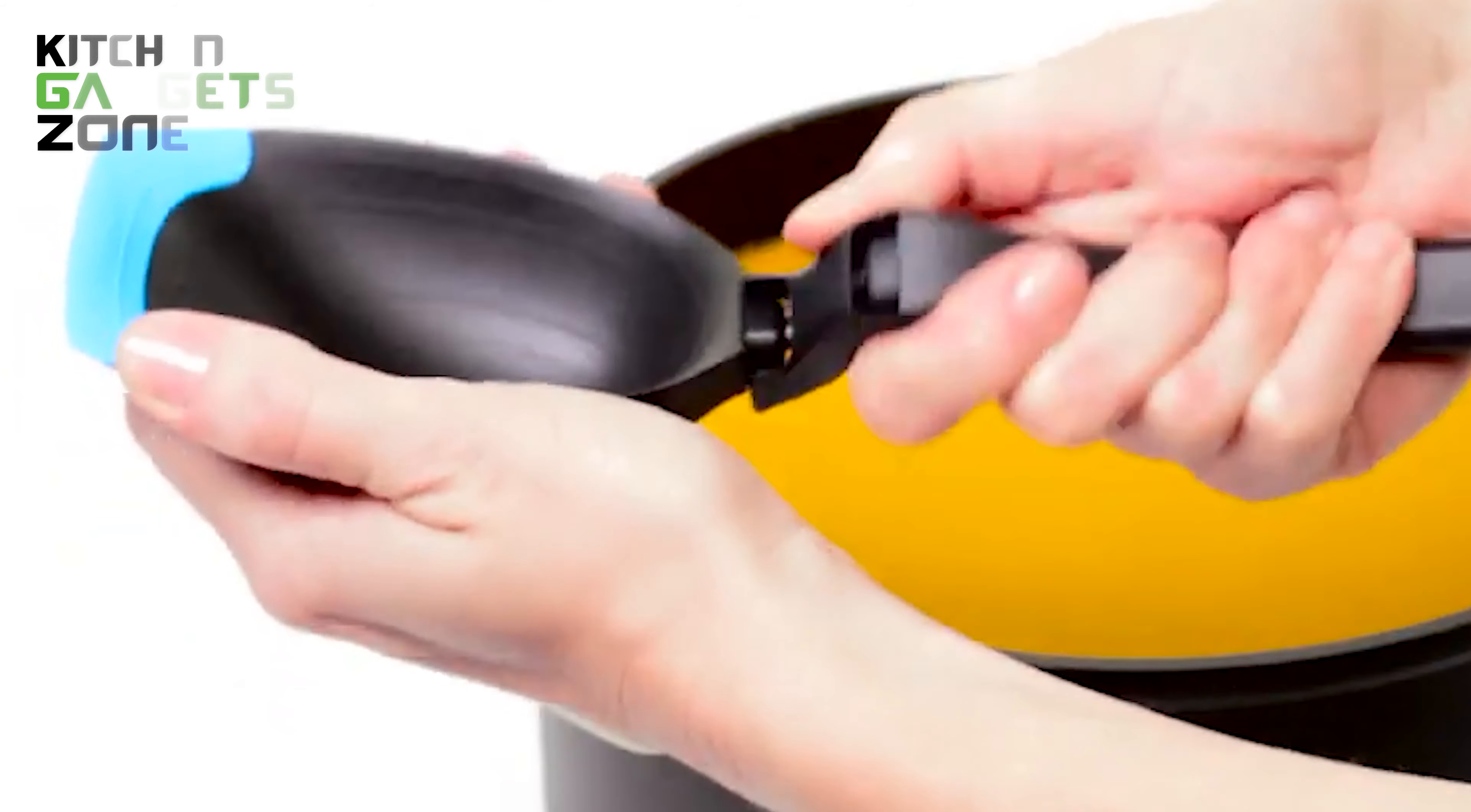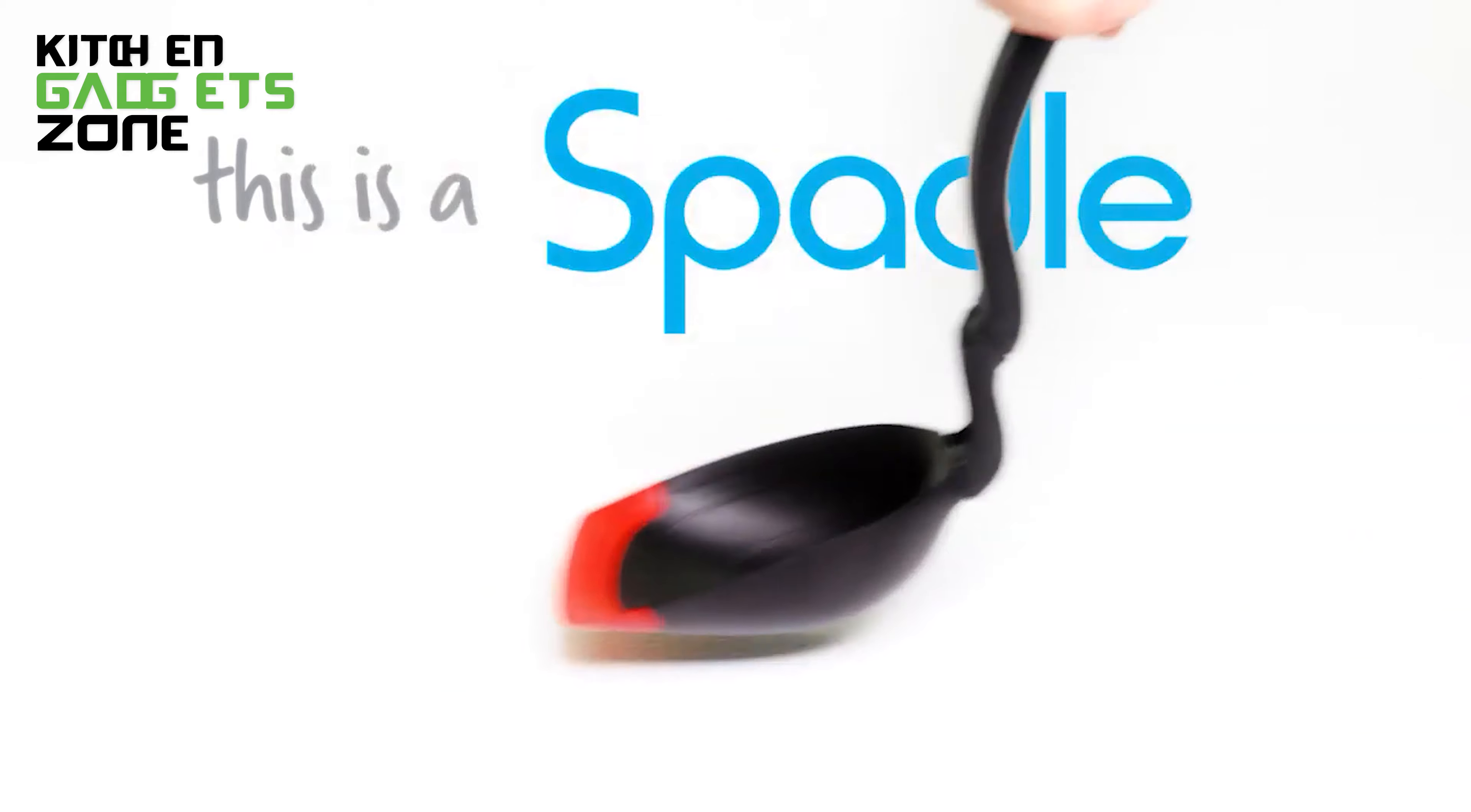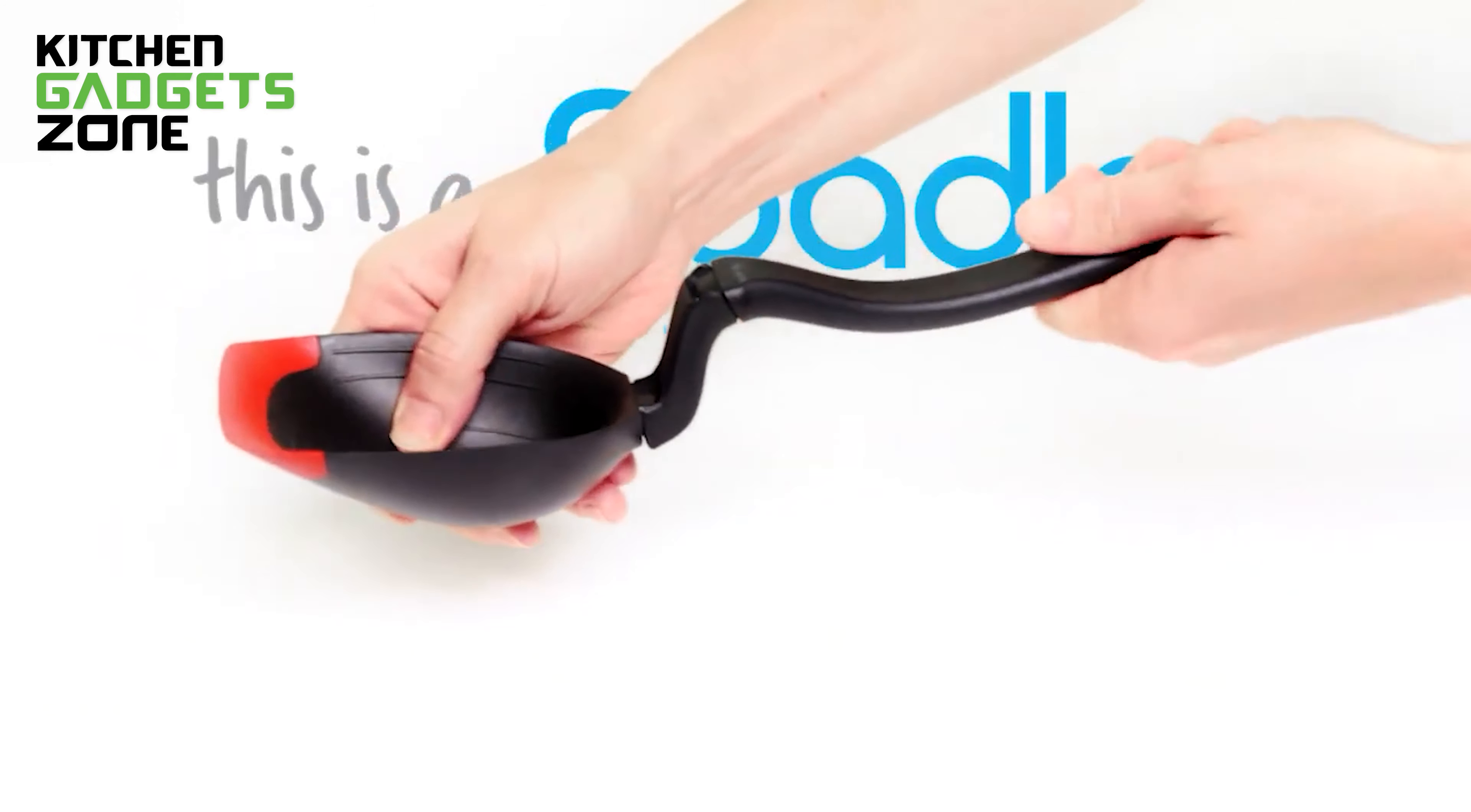The large one-half cup capacity head features easy-to-read measurements for 100 milliliters, one-quarter cup, teaspoon, and tablespoon, making serving and portioning a breeze. And when it's time for cleaning, a simple half-twist of Spadle's joints opens them right up, so the two sides don't touch and you can pop it straight into the dishwasher.